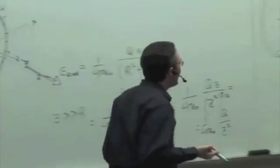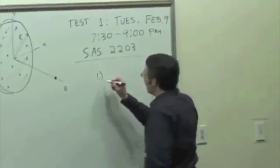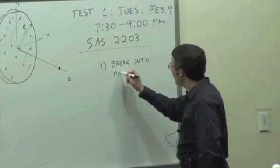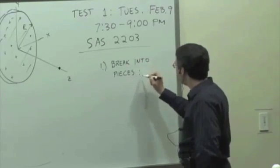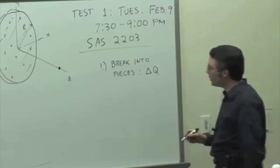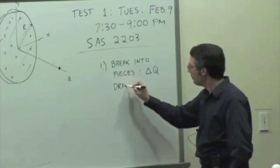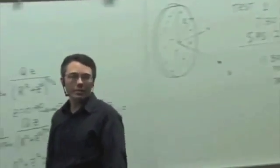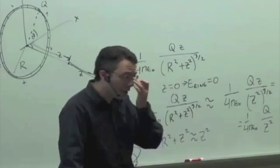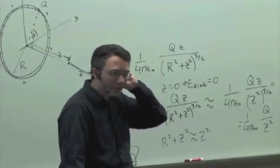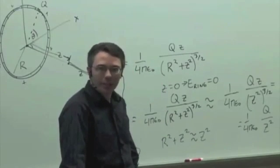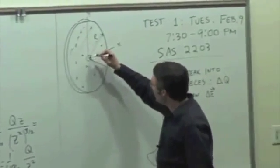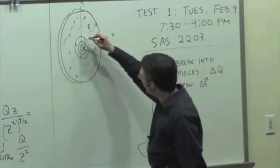What's the general procedure? The procedure is we break the charge distribution into pieces, each with a size of charge delta Q, and then draw the delta E. In the previous cases we've been breaking it up into pieces that look like point charges, but what might be a better choice here? We could break it up into concentric rings.